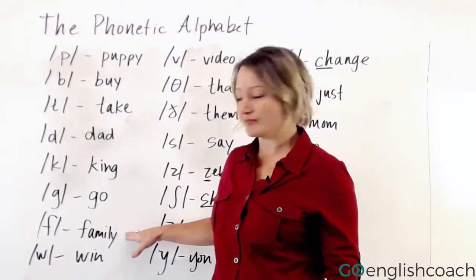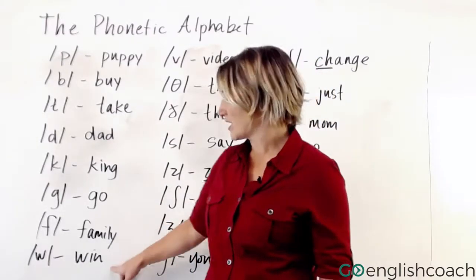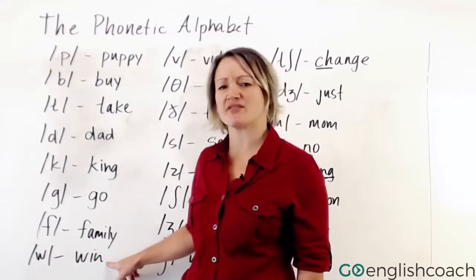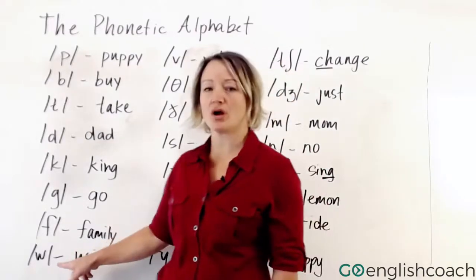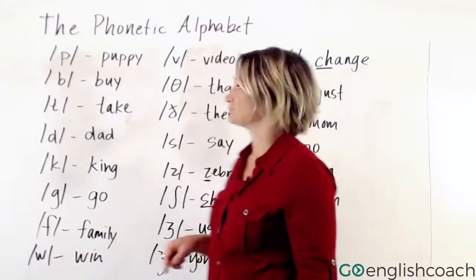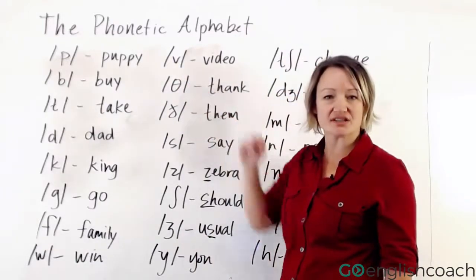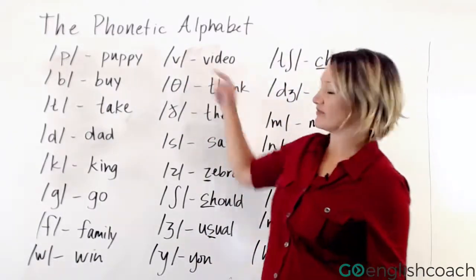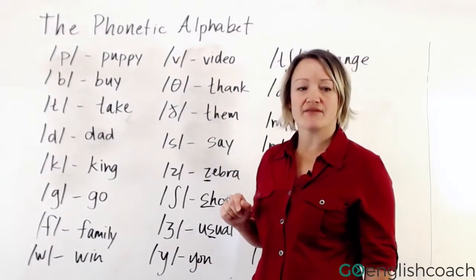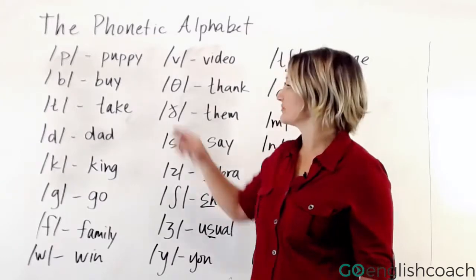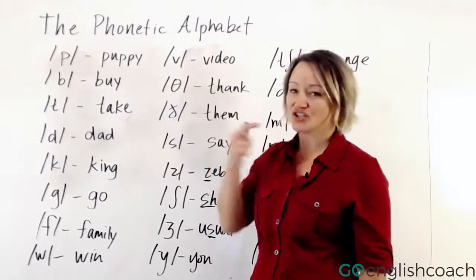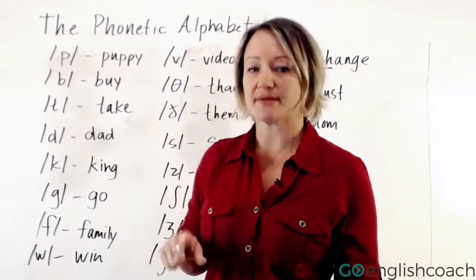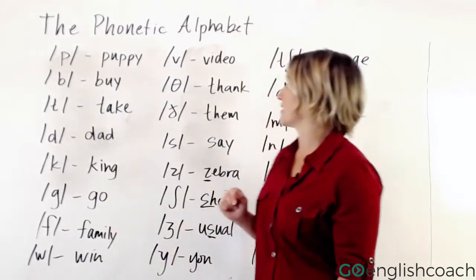F — family. W — win. Some students have a problem with W. Now we're into the second row here. We've got the V sound — your teeth are on your lips. Video. Some students have a problem with that one.